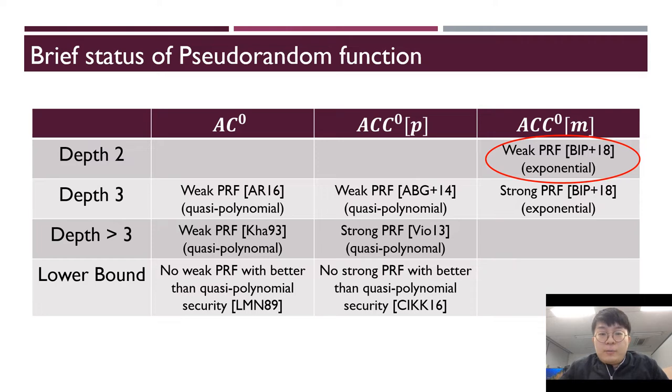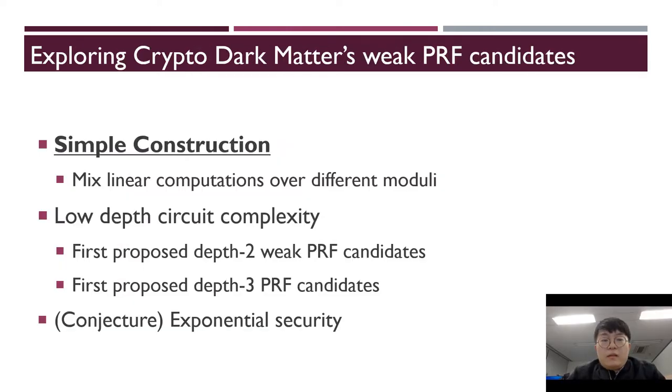The paper is Exploring Crypto Dark Matter. Exploring Crypto Dark Matter's weak PRF candidates have many contributions. First, it is a very simple construction. They only mix linear computations over different moduli. They have low depth circuit complexity. They are the first proposed depth 2 weak PRF candidates and also the first proposed depth 3 strong PRF candidates. Finally, they have plausibly exponential security.